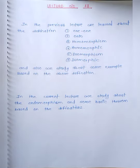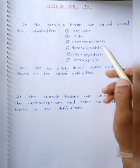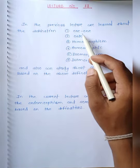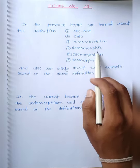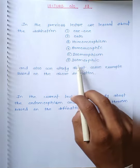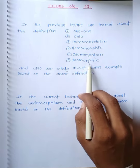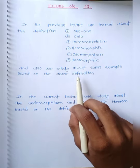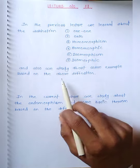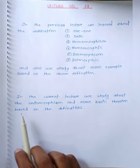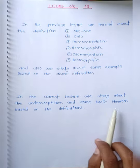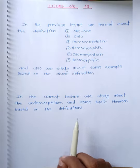Good morning guys, this is our lecture number 30. In the previous lecture, we studied about the definition of one-to-one, onto homomorphism, homomorphic, isomorphism, then isomorphic. Also, we saw some basic theorems and examples based on these definitions. In this current lecture, we will study about the endomorphism and some basic theorems based on the definitions.